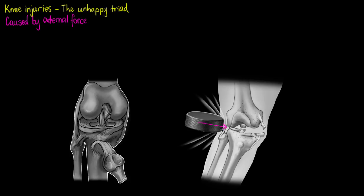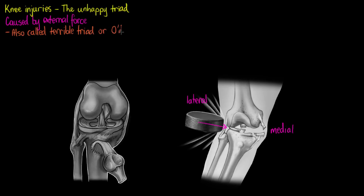You may also hear the unhappy triad referred to as the terrible triad or O'Donohue's triad. The triad itself consists of three distinct tears of three structures within the knee, all simultaneously.